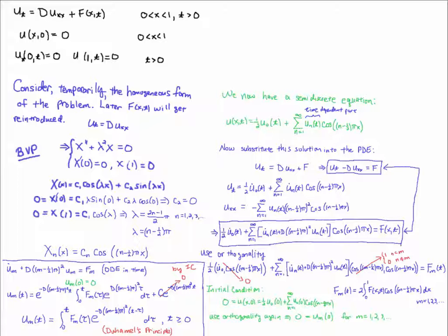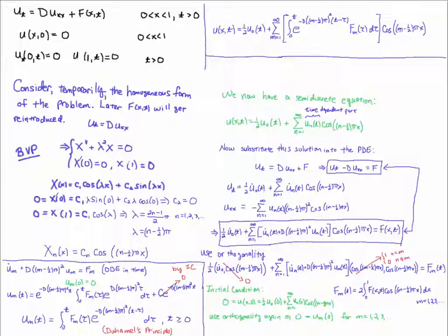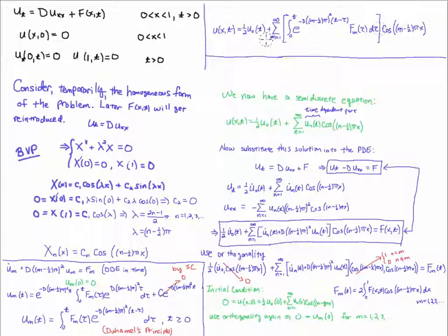Now that I have u_m I plug it into the solution — and there we go, that is the solution to our PDE. The term in brackets is Duhamel's Principle, coming from the homogeneous part. If f is positive you still have your decaying exponential but you're integrating with the f term, so you keep adding heat — this is a source term. As t → ∞ it keeps adding heat depending on your boundary and initial conditions. If f is negative, your solution would be losing heat from the initial condition. Good luck!